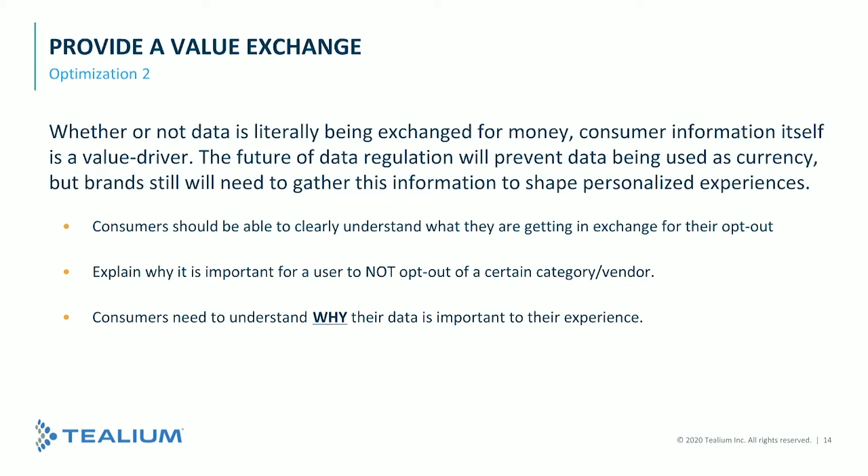A simple offline commerce analogy: when shopping, a cashier often asks for an email or address in exchange for a benefit — usually stated upfront. For example, 'I need your email so you can get a 10% discount.' That same principle should be implemented in your consent management descriptions: always explain the why before asking for data.